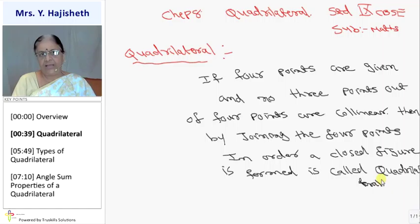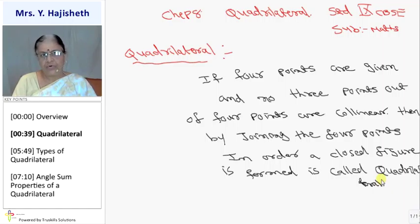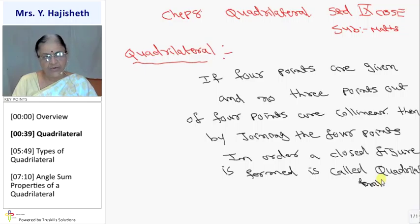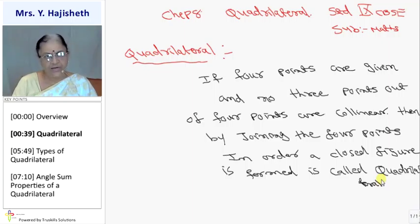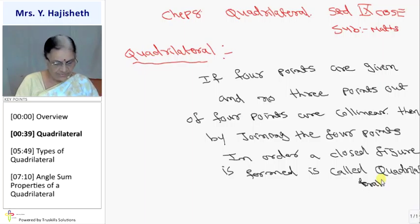You can also say it is a polygon formed by 4 sides. Any closed figure containing 3 or more than 3 sides is called a polygon. So a quadrilateral is a polygon having 4 sides.